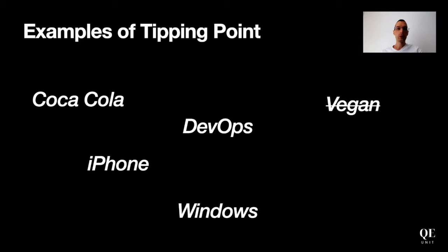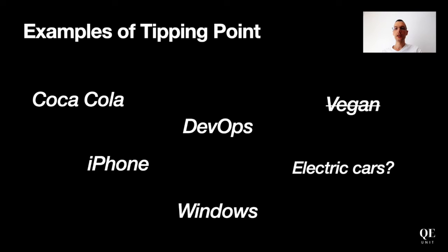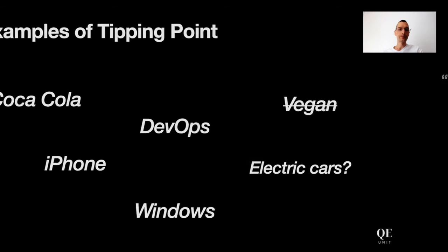I have no doubt about veganism, but maybe in 20-30 years, with problems around food, it may reach the tipping point. And electric cars — maybe we are at the tipping point now, with the Tesla brand and all the investment in that area.